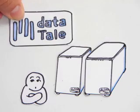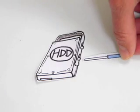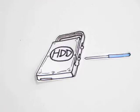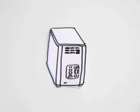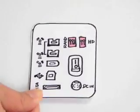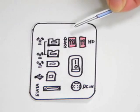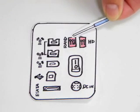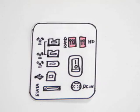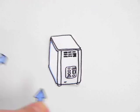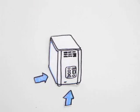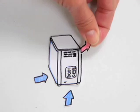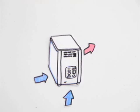Have you seen DataTail by Anto? Just screw its unique smart guider handle onto the hard drives and insert them into the enclosure. Then adjust the RAID and hard drive switches on the back of the enclosure. Now you can use it without any software installations. Plus, it dissipates heat by pulling in cool air from the bottom and blowing out hot air through the top.